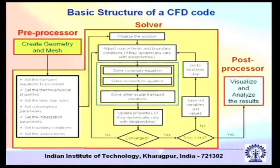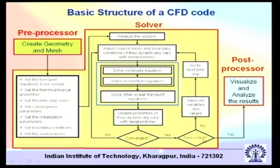Update the properties if they dynamically vary with iteration or time — some properties may not be constant but vary with iteration or time, and those need to be updated. Then check for convergence. If convergence is not achieved, go to the next time step or next iteration. Once iterations have converged and you have reached the end of your time domain, you come out of the solver and go to the post-processor, where you visualize and analyze the results in terms of graphical outputs like contour plots and vector plots.